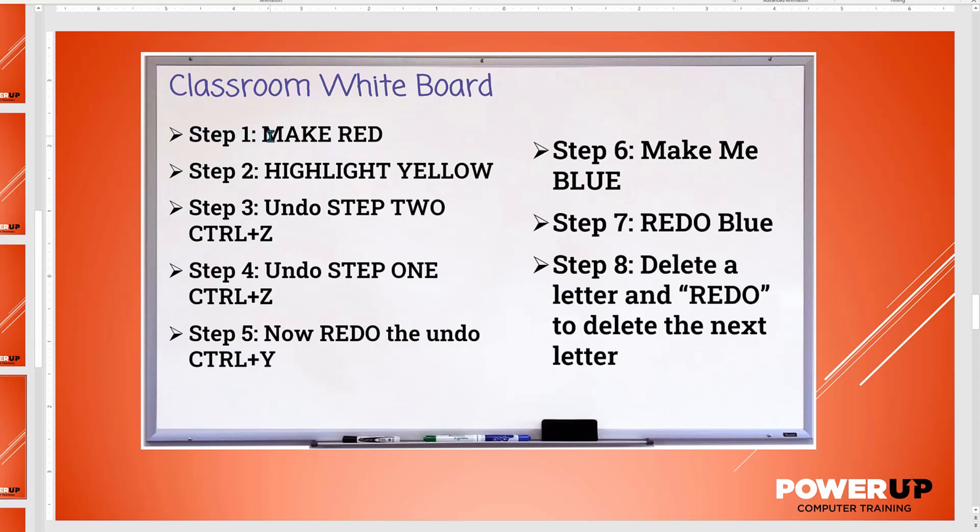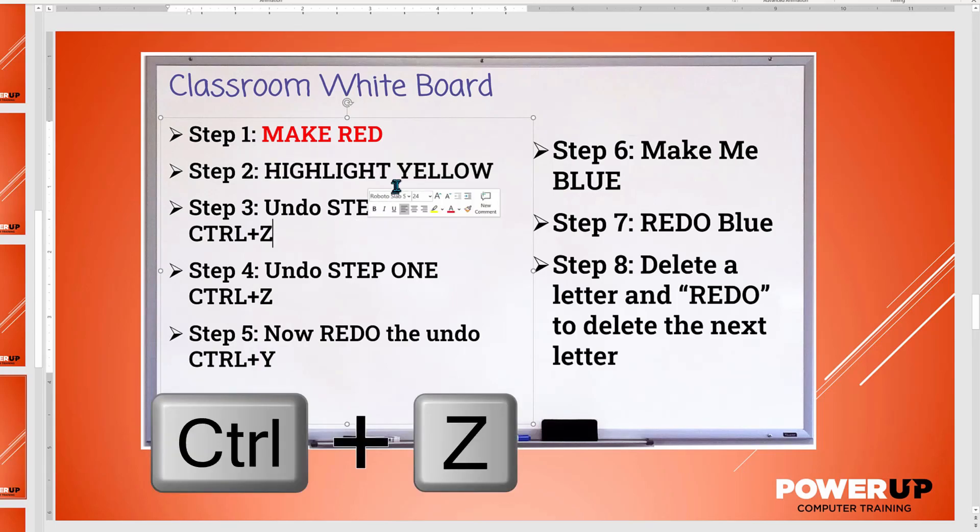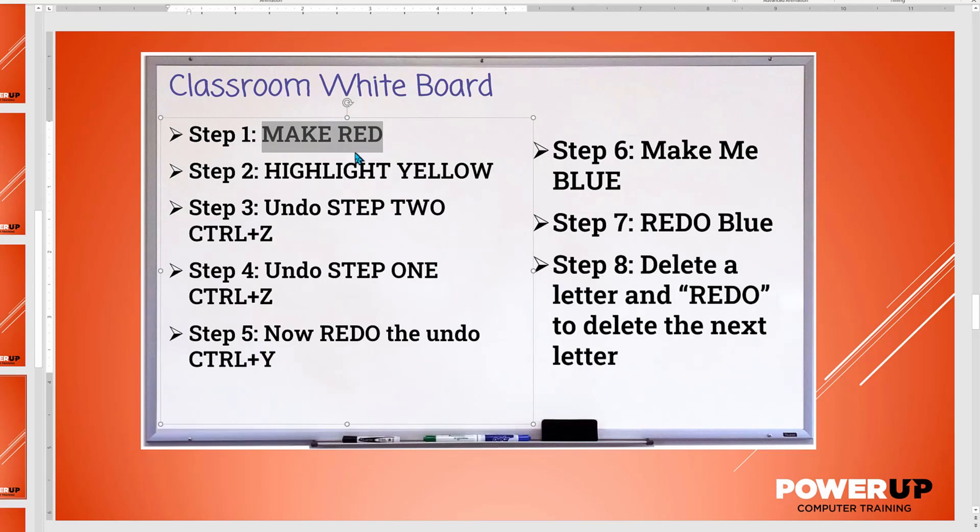I need to do two separate commands so that we can undo them. My first one is going to take those words and give them a red font. Then I'm going to highlight the next one and make this one yellow highlighting. And now I'm going to be able to undo my last step, which was the yellow highlighting. I do control Z that disappears. And I do control Z a second time. It undoes the red font. So multiple control Z's will undo going back and back and back.